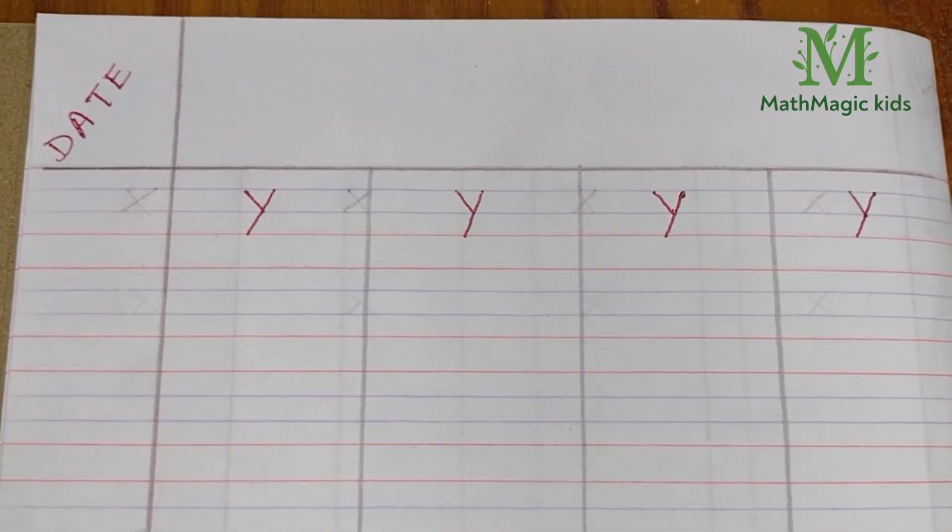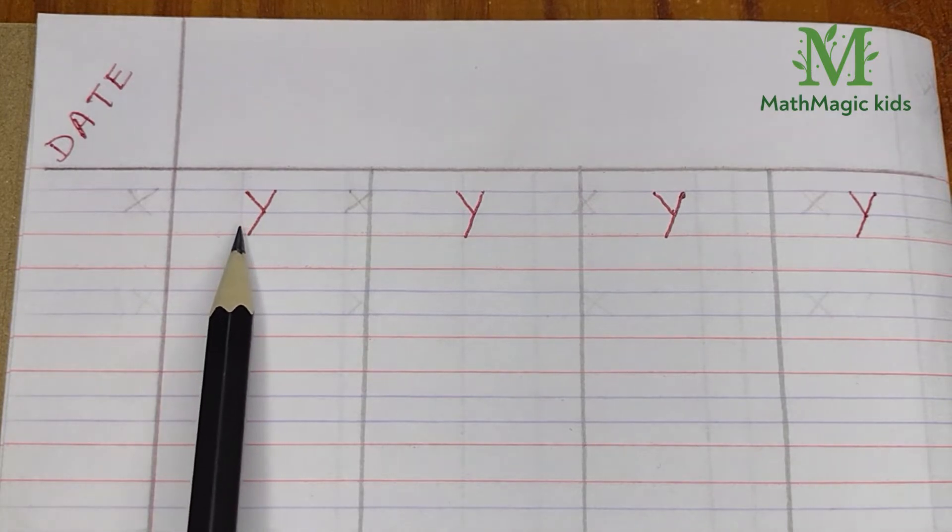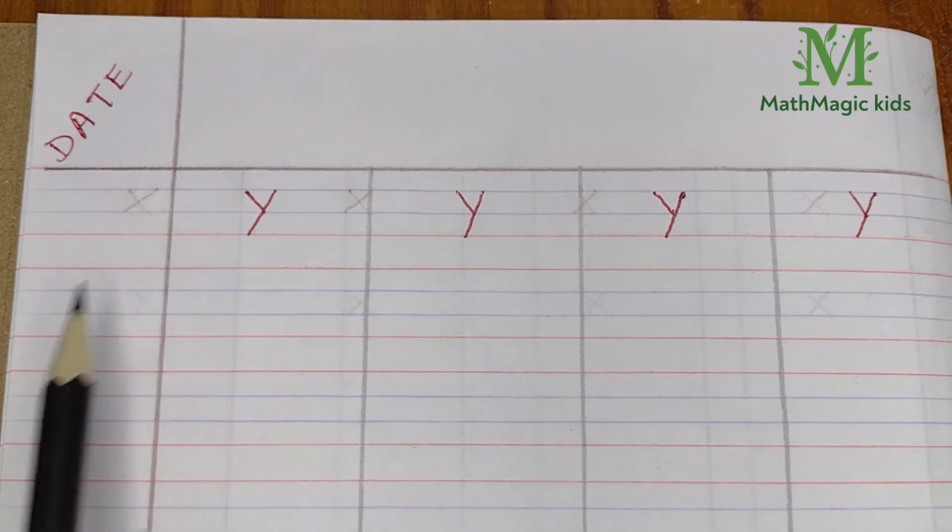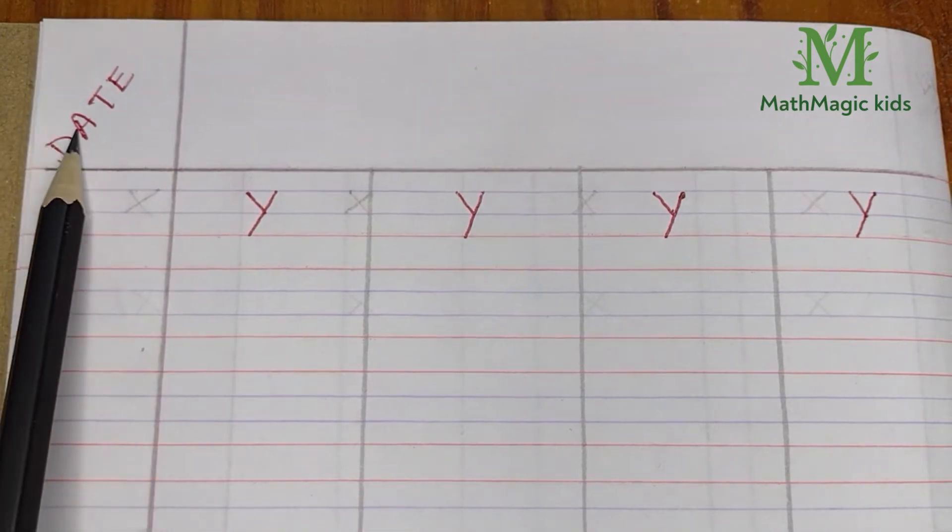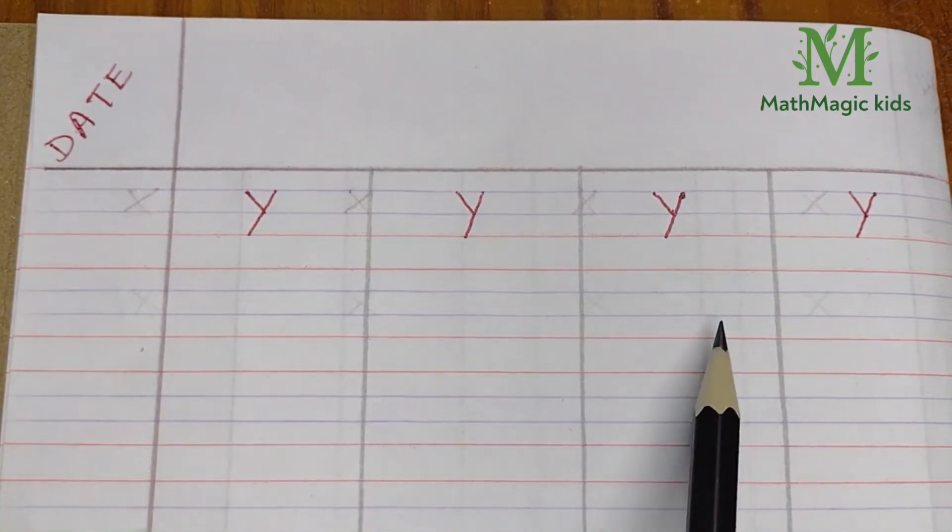Now, let's learn to write Y in lowercase. Before you start writing, draw the margins like this, put the date here and divide the page into 4 columns.